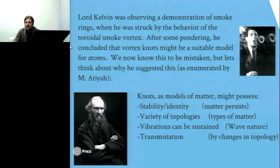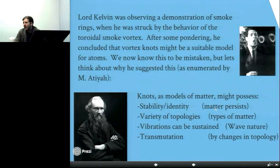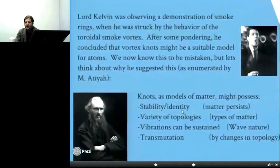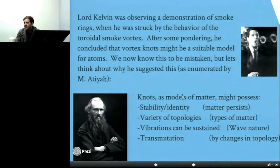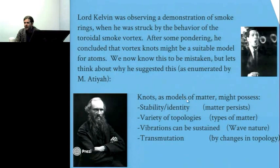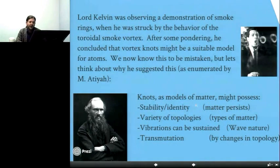And some of the arguments made for that is that knots have stability and identity. So the topology of a knot is what it is and it's different from other things. There are a variety of these topologies to describe a variety of types of stuff. In his case, he was thinking of atoms. The vibrations can be sustained on the knots. So there's inherently a wave-like nature because the snake's biting its own tail, so to speak. And then there's a possibility of transmutation. So the process of changing topology can potentially turn one thing into another.